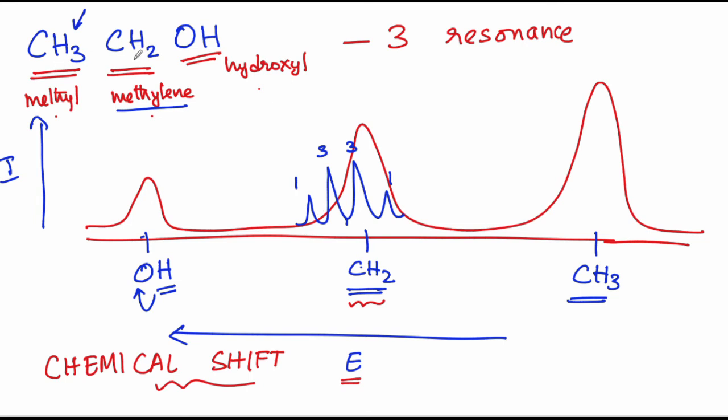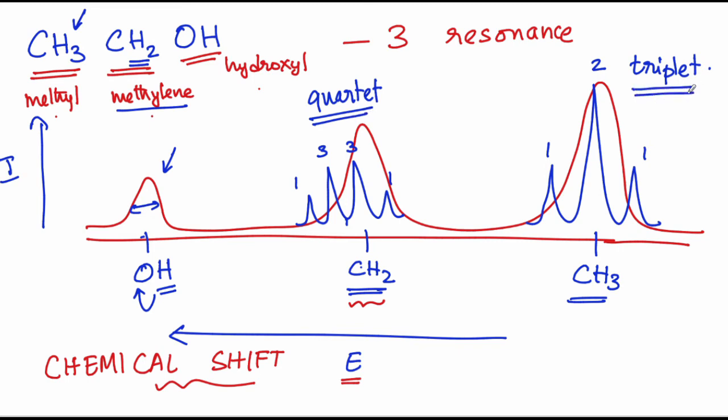And this methyl proton that has two neighboring methylene protons ends up coming as a triplet in the ratio 1 is to 2 is to 1. So, this one we call as a quartet and this one we call as a triplet. This information of being triplet and quartet also helps one understand what kind of neighbors are present for the methylene and the methyl group. So, this is the added level of advantage which you end up getting on top of chemical shift. This parameter is called scalar coupling.